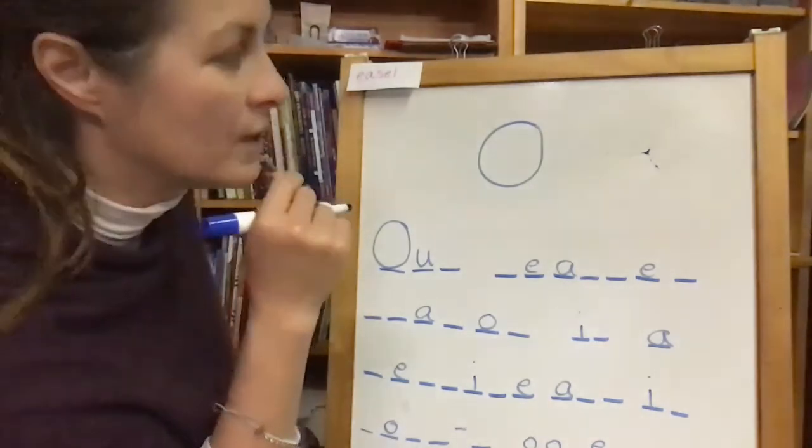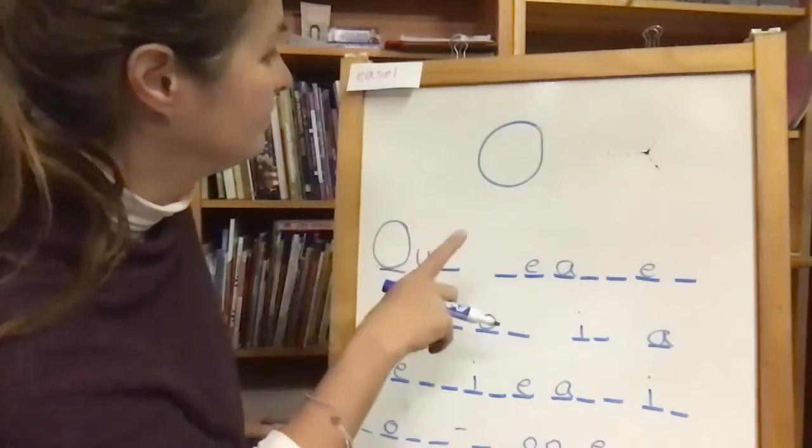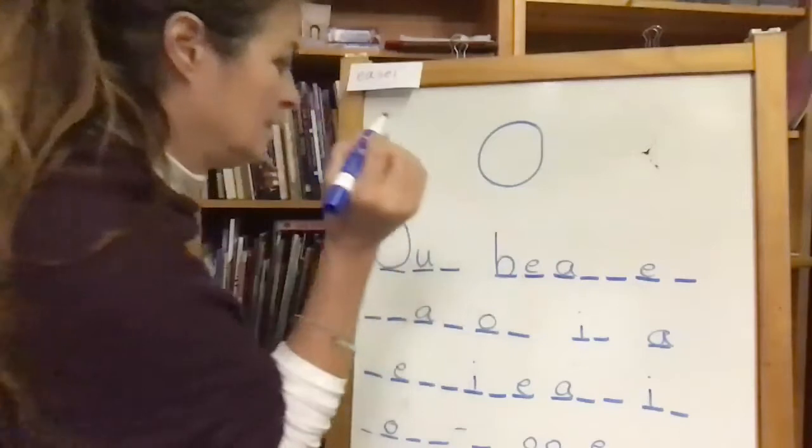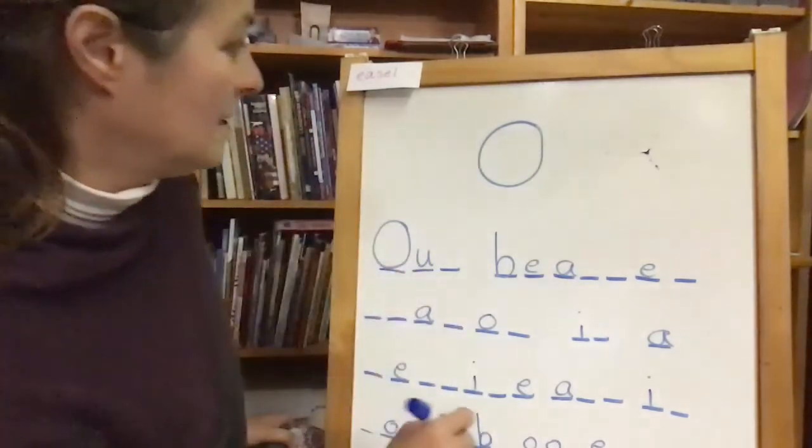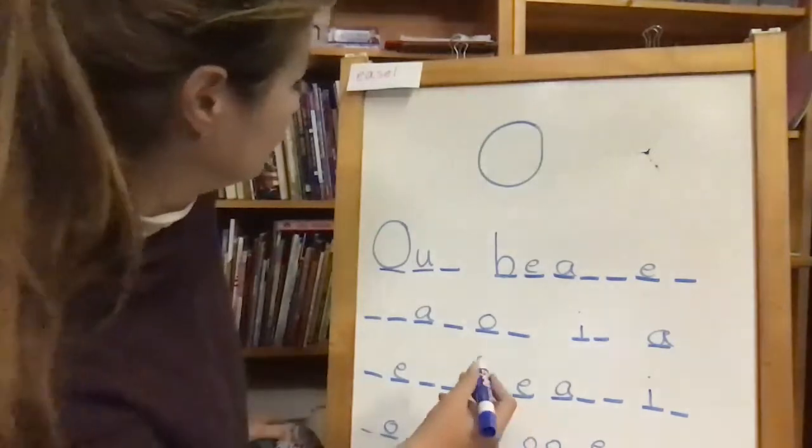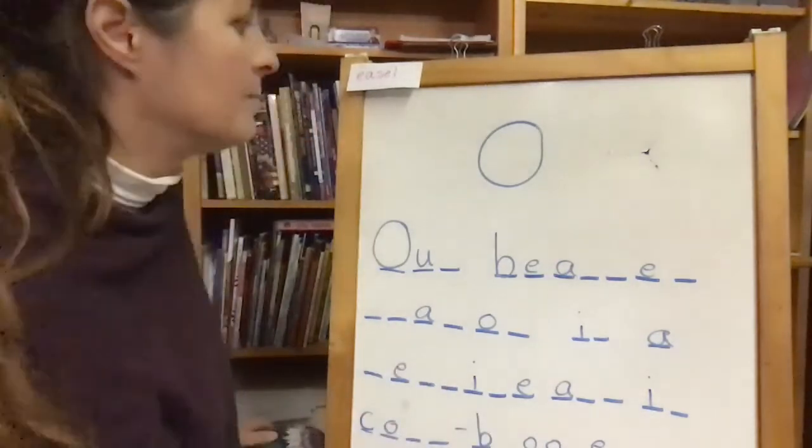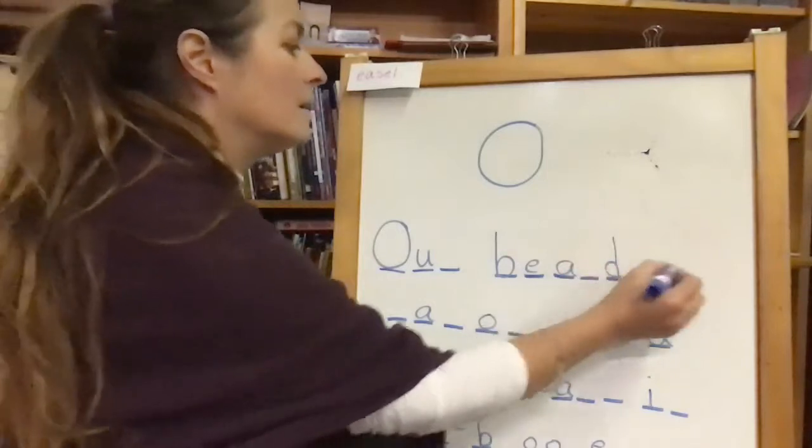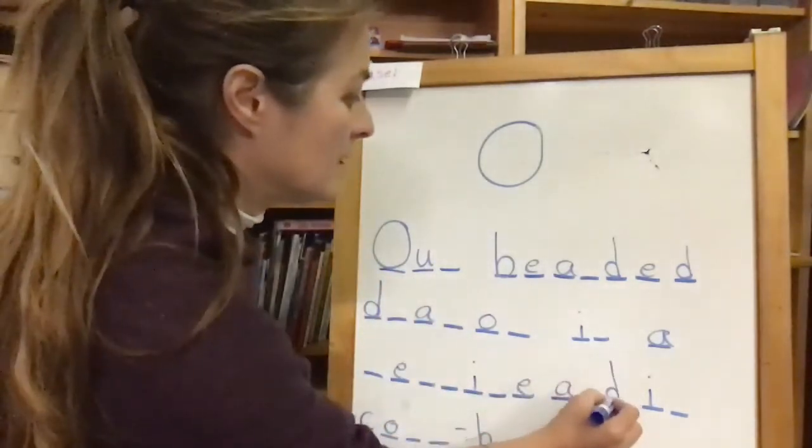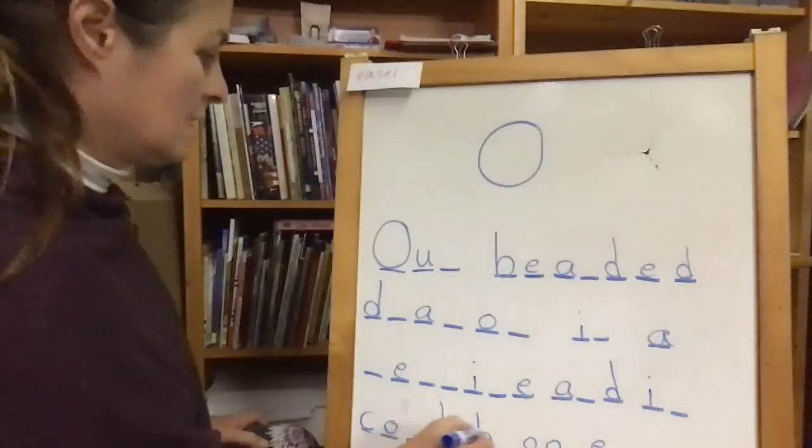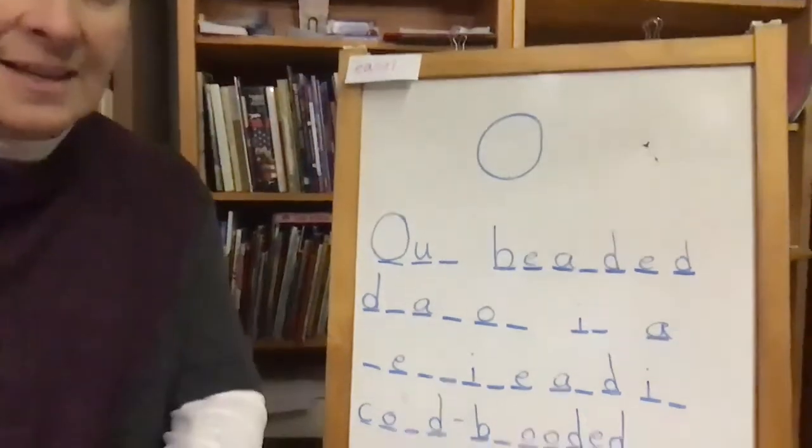So then they will start guessing consonants. So let's just randomly guess a B. Yes, there is a B. There are two B's. And then somebody might say, how about C? There is a C. And what about a D? Yeah. Oh, there's a D right there. There's a D right there. Oh, and there's two letter D's right there. Oh, my goodness. Look at all these letters you guys are guessing.